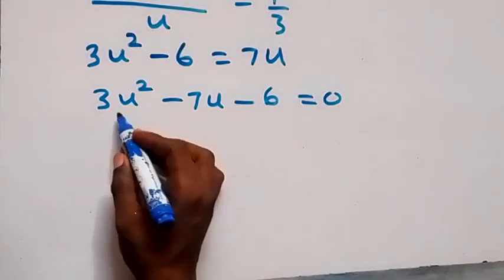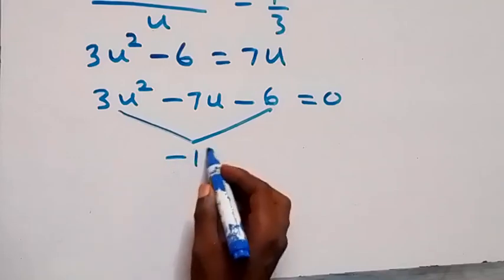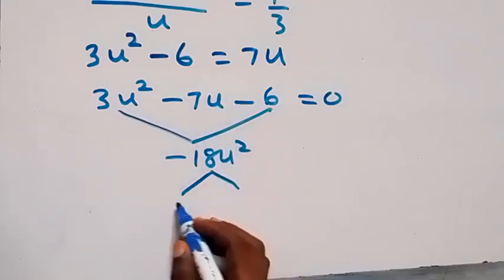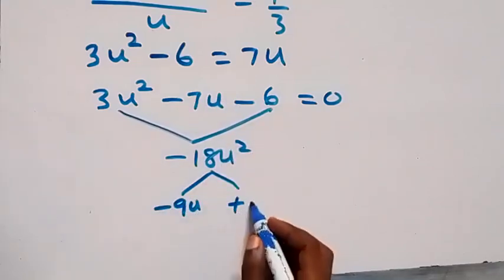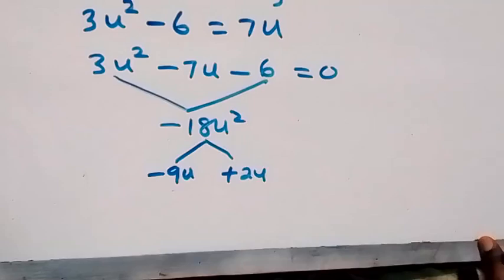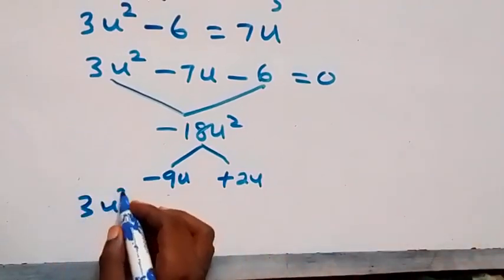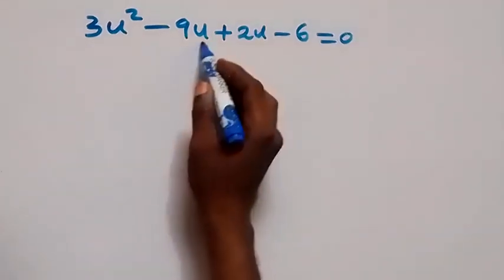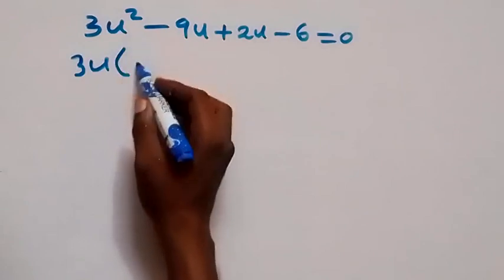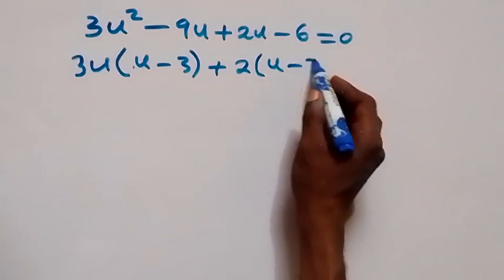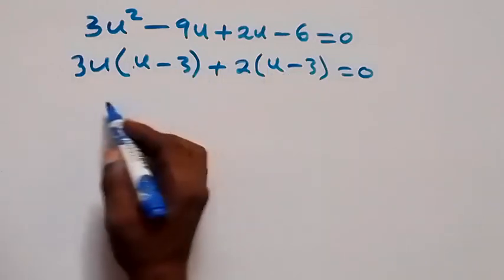To factorize, we multiply the first and last terms: 3 times negative 6 gives minus 18u squared. We need two factors whose product is minus 18u squared and whose sum is minus 7u. Those are minus 9u and plus 2u. So we rewrite the quadratic as 3u squared minus 9u plus 2u minus 6 equals 0. Factoring out common terms gives 3u(u minus 3) plus 2(u minus 3) equals 0.